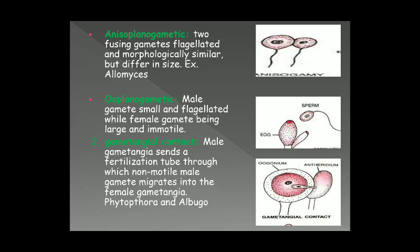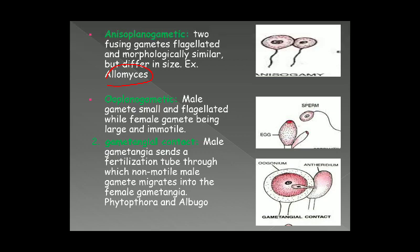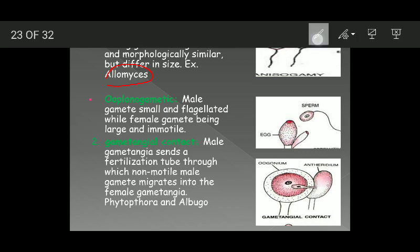The second subtype is anisogametic planogametic copulation. Here the two fusing gametes are flagellated and morphologically similar in shape, but they differ in size. Example is Allomyces — both are motile but one is smaller and the other is bigger. The third subtype is oogametic copulation, where the male gamete is small and flagellated while the female gamete is large and immotile. The female gamete (egg) is immotile, present inside the gametangium, and is large.